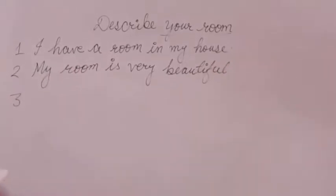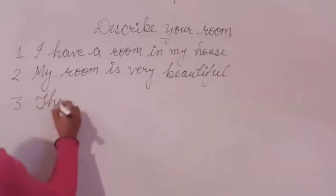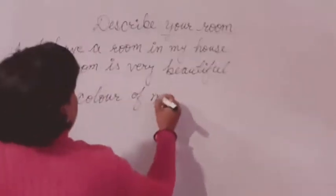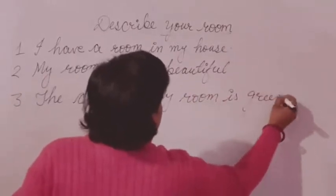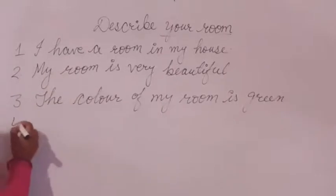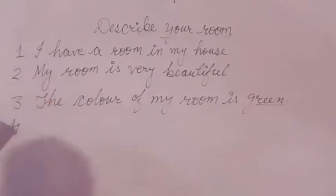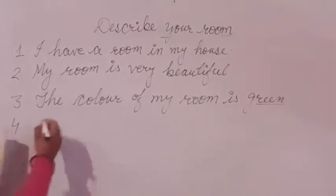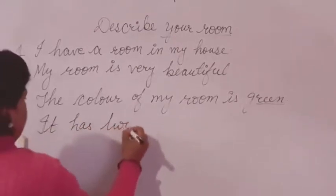Third line: what is the color of my room? The color of my room is green — you can write the color according to your own choice. Fourth line is about the windows, the number of windows in your room. It has two big windows.